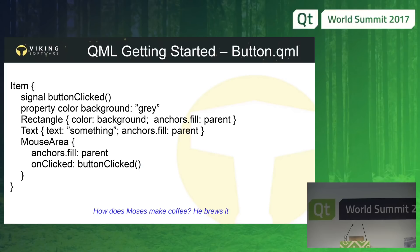We set a few properties here. A real button would have a long list, but I only have the background here, which is grey. Then you have a rectangle — this is what's inside; a button is usually a rectangle. Inside the rectangle we show text. QML is read from the top down, so you first draw the outermost by drawing the first inside, then the second, and so on. At the bottom, a mouse area — we listen for the click, and if we get a click inside, we say 'button clicked.'